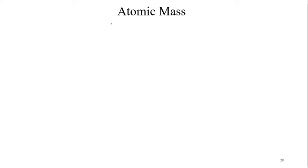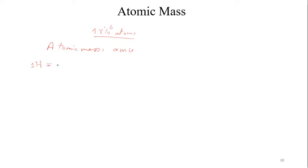For atomic mass, one dust spike contains 1 × 10⁶ atoms, and atomic mass is measured in atomic mass units (amu). The atomic mass unit is defined as the mass equal to one-twelfth of the mass of one carbon atom. For example, for hydrogen, the atomic mass relative to carbon is 8.4, so we cannot get the mass directly — we relate it to the mass of carbon.